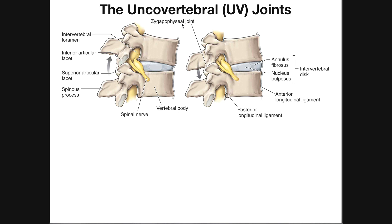We also have a zygapophyseal joint here, also called a facet or facet joint. It exists between the inferior articular process of the vertebra above and the superior articular process of the vertebra below, with one on each side — left and right. The zygapophyseal joint is a synovial joint, with a synovial membrane lined with synovial fluid and a fibrous capsule.